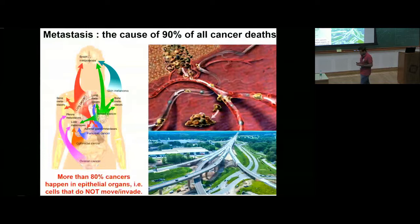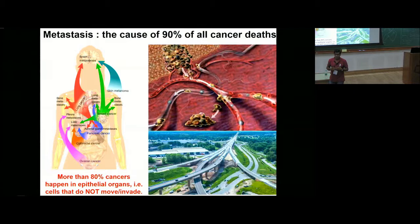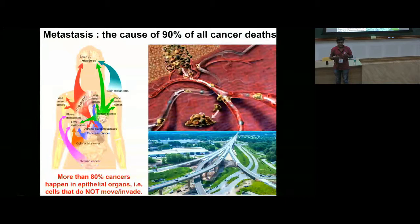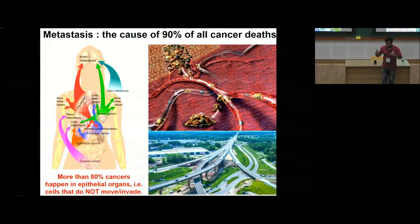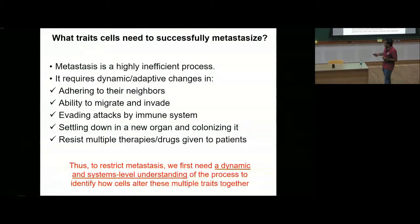When I started looking into this question, what was most intriguing to me was that more than 80% of cancers happen in epithelial organs. The most common cancers — prostate, breast, lung, liver — these cancer cells do not have the inherent property to start moving because they are stuck in a specific 3D geometry with their neighbors in a specific apico-basal polarity. So how do these cells gain the ability to move? How do they survive in circulation and then form a whole new tumor at a different organ? That is what I'm trying to understand.